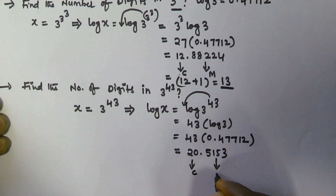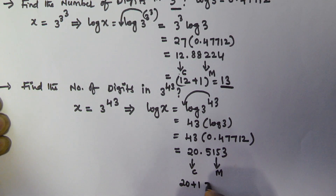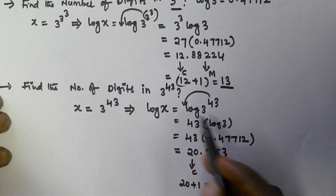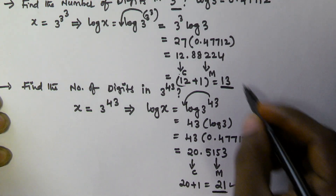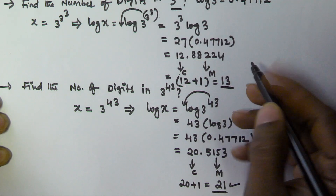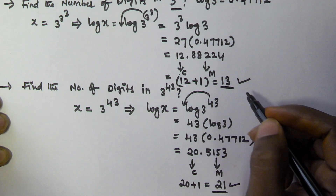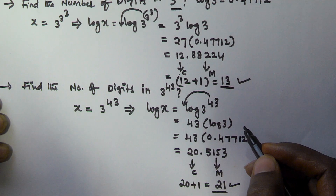The mantissa value is 0.51616. The number of digits is given by characteristic plus 1, so that is 20 plus 1, which equals 21. The number of digits in 3 to the power of 3 to the power of 3 is 13 digits. I hope you got this. Thank you very much for watching this video — please subscribe to my channel.